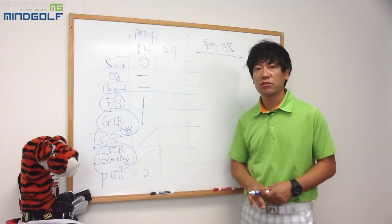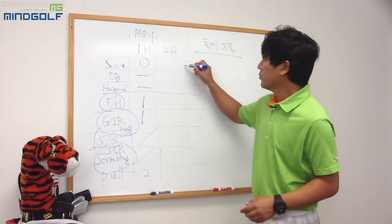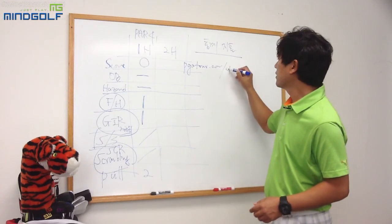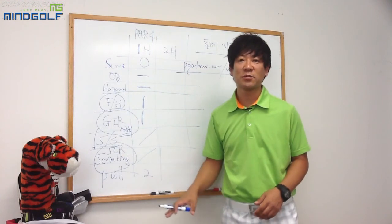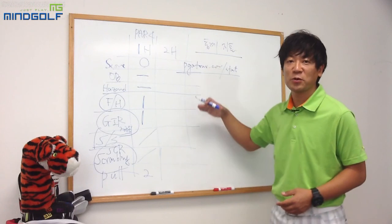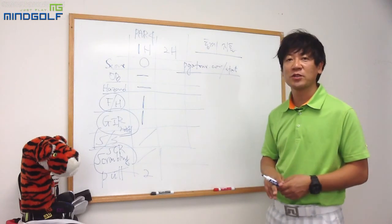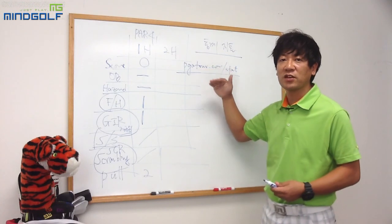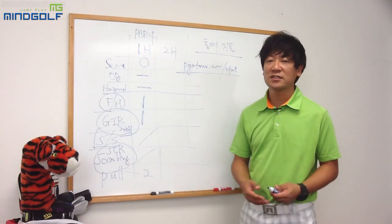이러한 지표들은 각종 투어 통계 사이트에서 볼 수 있습니다. PGA투어는 PGATour.com의 Stats 페이지가 있는데요, 여기에 가보면 이런 지표들 말고도 굉장히 많은 통계 지표들이 있습니다. 각 분야별로 누가 제일 잘하는지, 장타는 누가 잘하고, 퍼팅은 누가 잘하고, 쇼게임은 누가 잘하는지를 이러한 통계로 볼 수 있습니다.